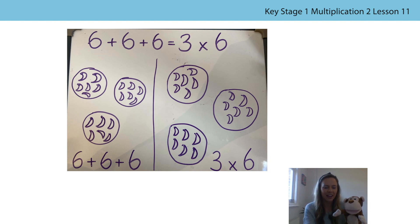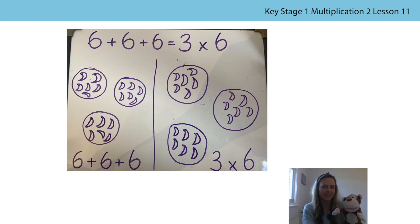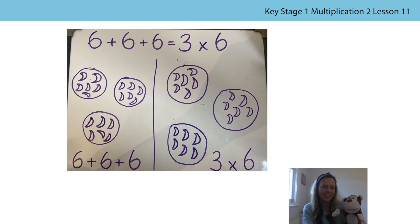Bananas are his favourite fruit. Let's have a look at what he's done. You can see on the left hand side here, he's got one group of six, two groups of six, three groups of six bananas. So he's got six plus six plus six. On this side, he's got one group of six, two groups of six, three groups of six bananas. So he's got three times six, or three sixes. Well done Bongo, you've definitely convinced me that six plus six plus six is equal to three times six.